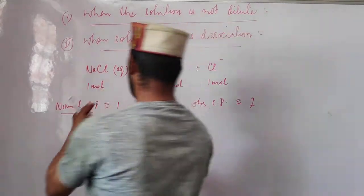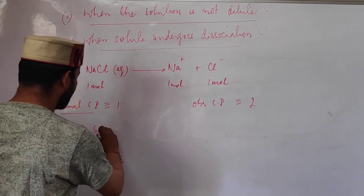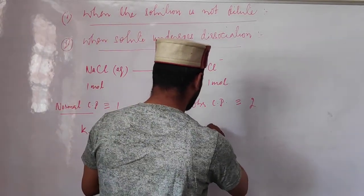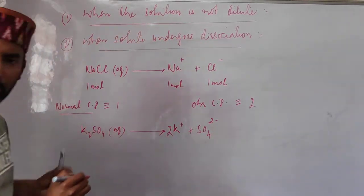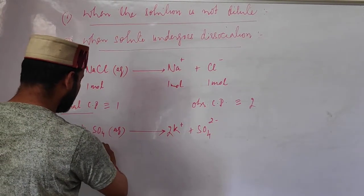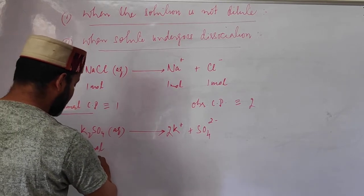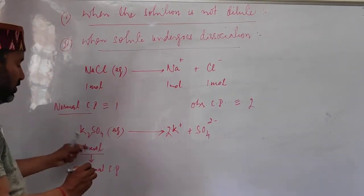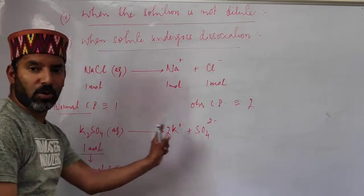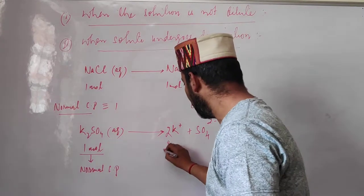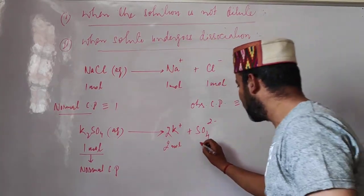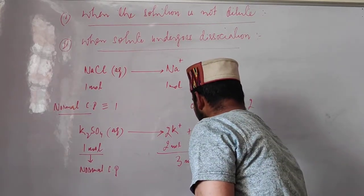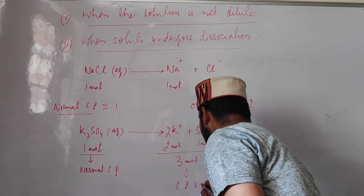Another example: K₂SO₄, which in aqueous solution dissociates to give potassium ions and sulfate ions. If we add one mole of K₂SO₄, the normal colligative property corresponds to one mole of solute. But since this substance undergoes dissociation, the resulting solution has two moles of potassium ions and one mole of sulfate ions — that is, three moles of solute particles total.